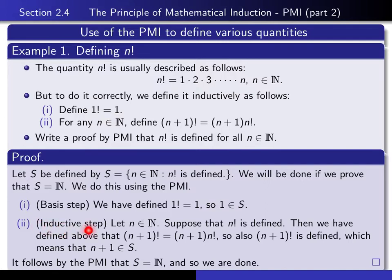In the inductive step, we give ourselves a generic n, and we assume that n is an element of S — in other words, that n factorial is defined. We have to deduce from that that n+1 factorial is defined. And that follows from our definition: since n factorial is defined, n+1 factorial equals n+1 times n factorial is also defined, so n+1 is an element of S.